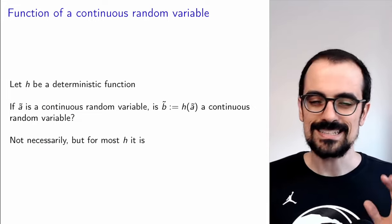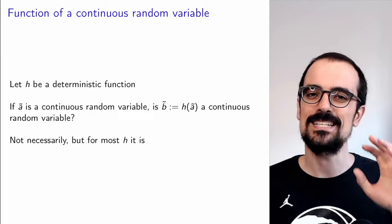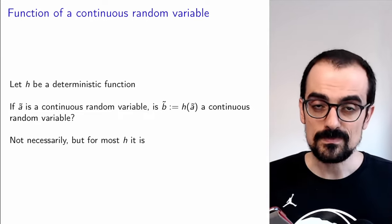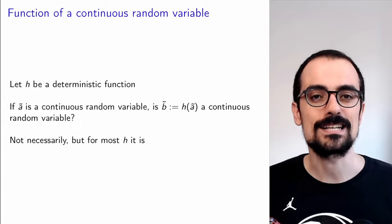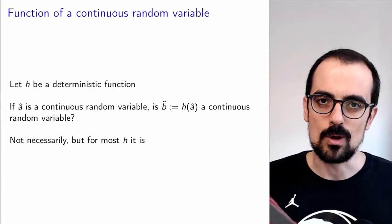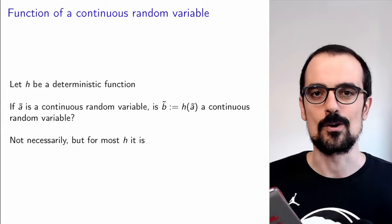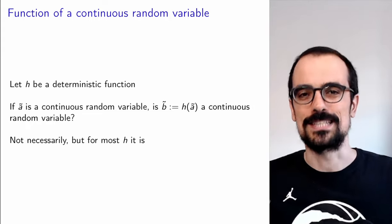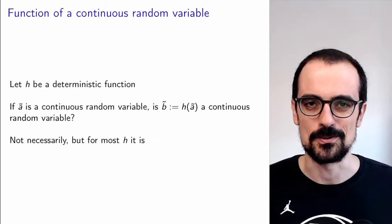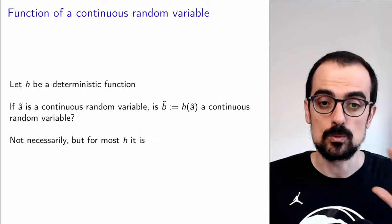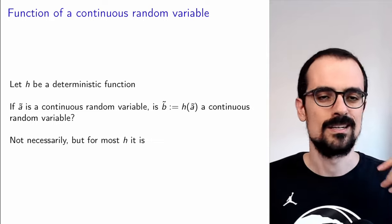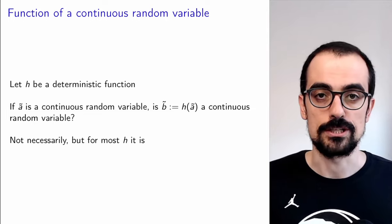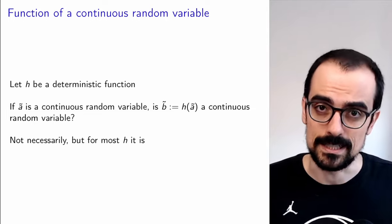The answer is not necessarily. But this is a very mathematical answer, because in practice, most of the time it will be a valid continuous random variable. When you're doing probabilistic modeling, it will usually be valid, but let me explain why it might not be.